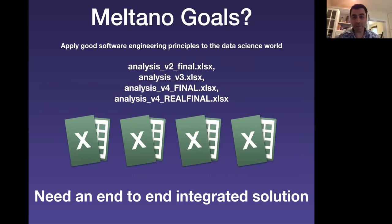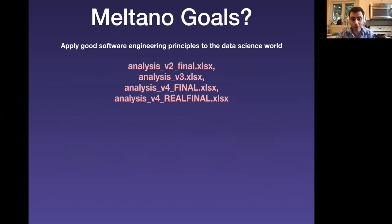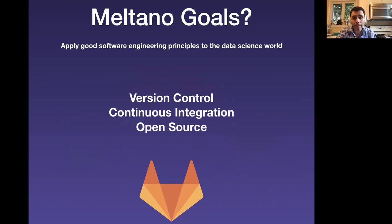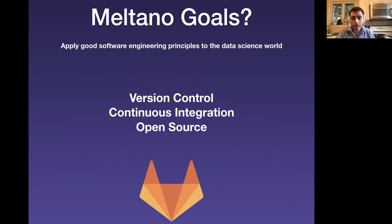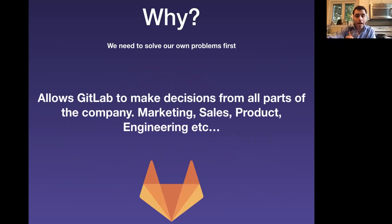In the data science world, they might pass around data using Excel spreadsheets, and you know those might end up in a couple of different versions. What you really need is an end-to-end integrated solution, which is what we use at GitLab. We can apply software engineering principles — version control, continuous integration, and open source — to the data science world to make the process much easier. In Meltano, we're going to use convention over configuration, and it's going to allow GitLab to make decisions from all parts of the company: marketing, sales, product, and engineering.